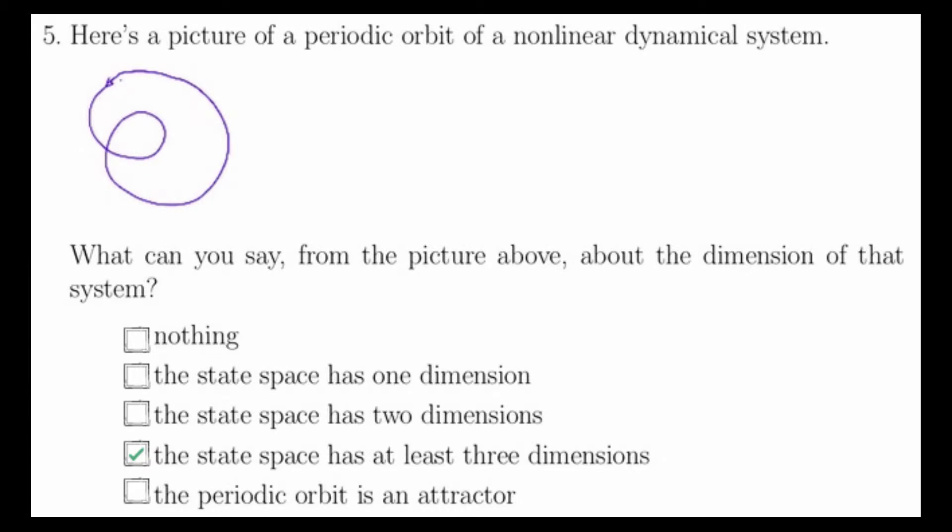It could, however, have many more. We can also not say that the periodic orbit is an attractor. It could be that this is an unstable periodic orbit, for example, that does not attract anything. To know if this is an attractor or not, we'd have to find a set of initial conditions that attracted to this periodic orbit. The amount of information that is given is not enough to conclude this, so the only thing we can conclude is that the state space has at least three dimensions.